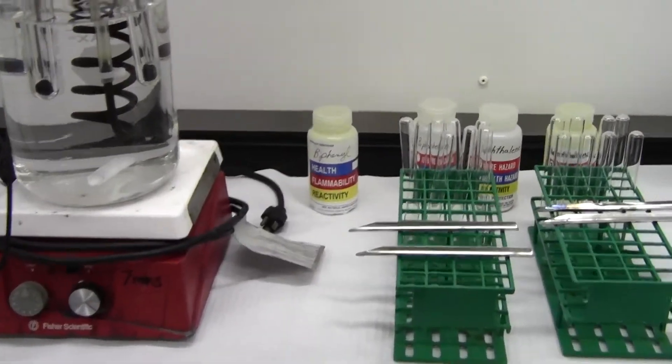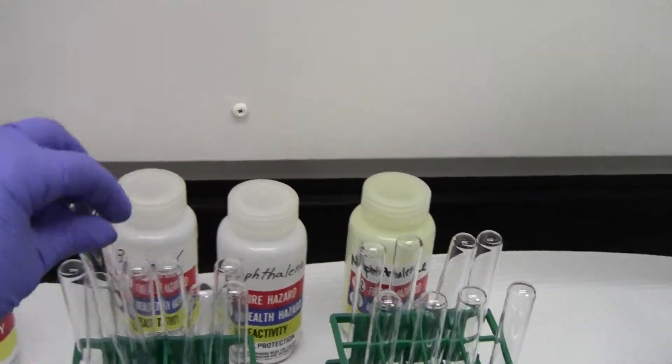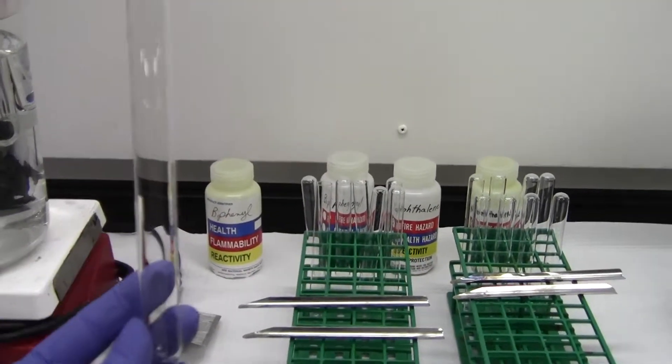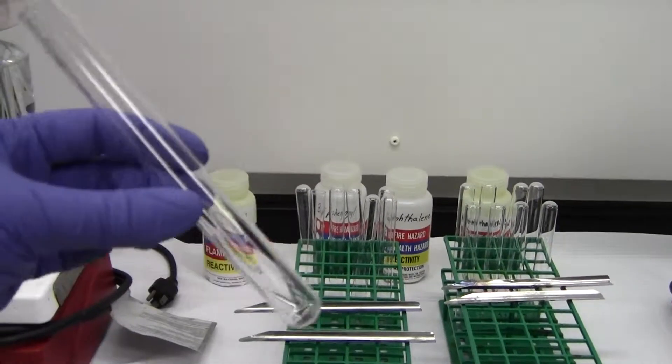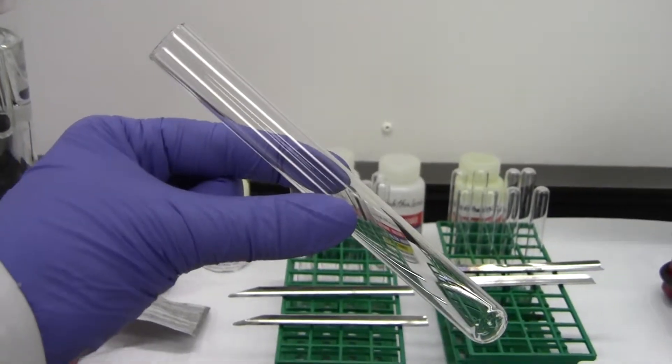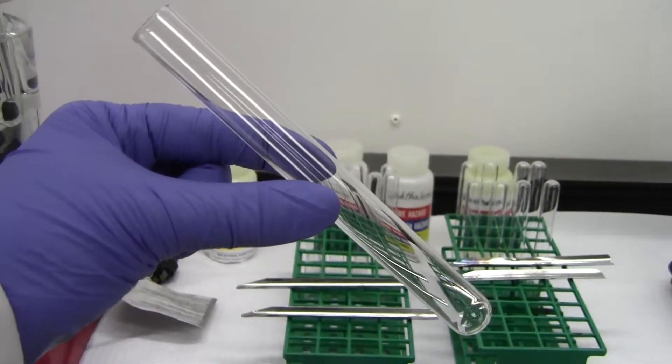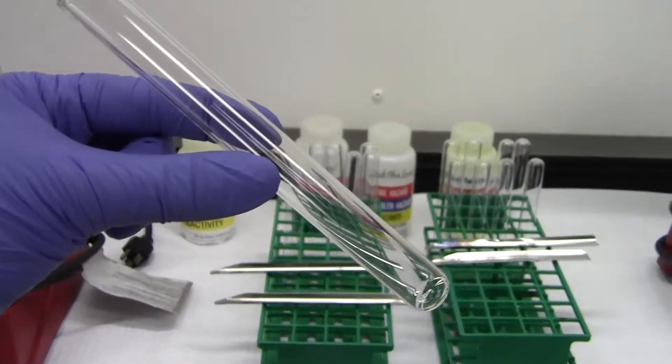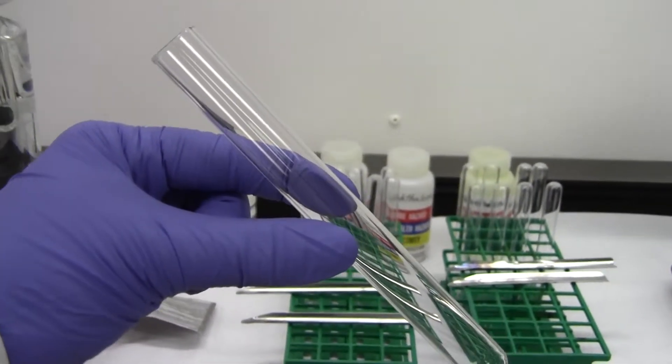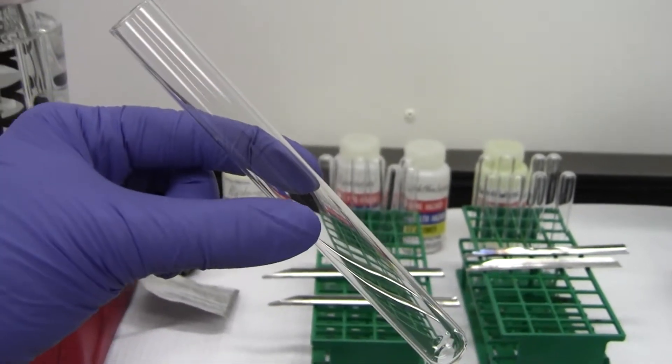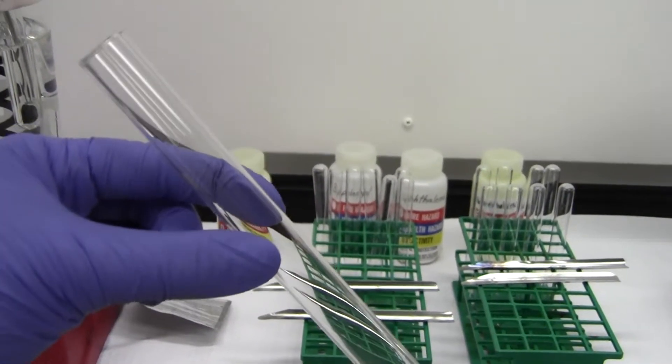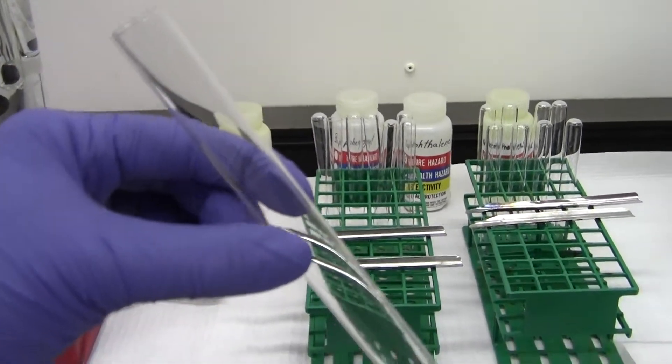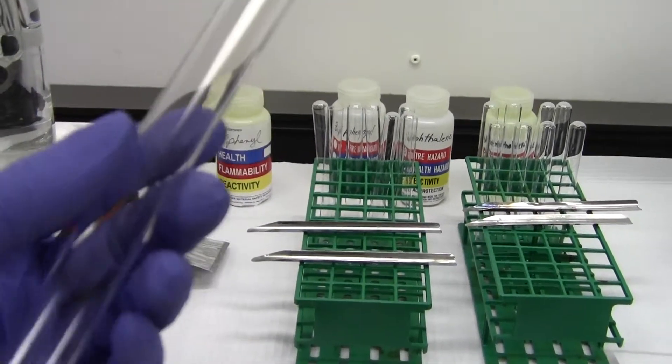So the test tubes are right here. They should already be here and clean for you. Into a single test tube you will measure out a mixture. You can check your lab manual. I'm not sure if it tells you exactly how much of each compound to add to the test tube. But what's important is that the total mass for each one of your samples is 5 grams. So you can decide what mass of biphenol and what mass of naphthalene will go together to make a total mass of 5 grams.